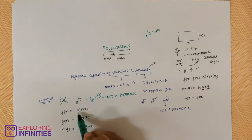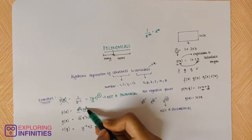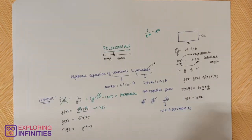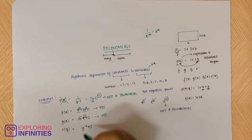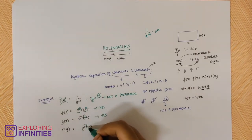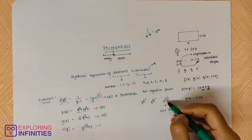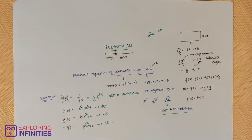x² + 2x + 1 — all powers are positive, so this is a polynomial. The power of x is 2, so clearly it is a polynomial. For y to the power minus 2 plus 2, the power of y is minus 2, which is a negative power, so it is not a polynomial. I hope you understand this. Now let's move on to the next topic: the degree of a polynomial.